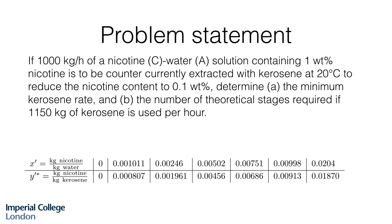It's to be extracted with kerosene in a counter current arrangement at 20 degrees Celsius and should reduce the nicotine content to 0.1 weight percent. We are asked to determine the minimum kerosene rate, the minimum solvent flow rate, and secondly the number of theoretical stages that would be required if the solvent flow rate was 1,150 kilograms per hour.